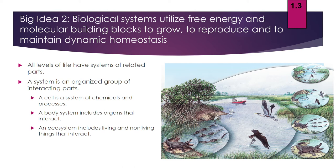Our second big idea is that biological systems utilize free energy and molecular building blocks to grow, reproduce, and maintain dynamic homeostasis. A system is any organized group of interacting parts. In biology, we look at cells as systems, body systems like the nervous, respiratory, or cardiovascular system, and ecosystems, which include both living and non-living parts of an environment. In all these cases, interacting pieces form complex interactions.